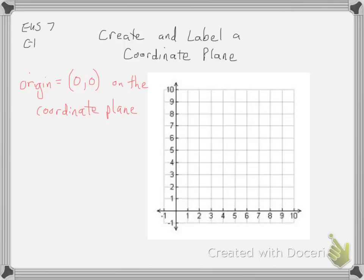So the origin, this little spot right here, is the origin. The next thing you need to be able to label are the X and Y axis. This line going left to right, the horizontal line, this is the X-axis.